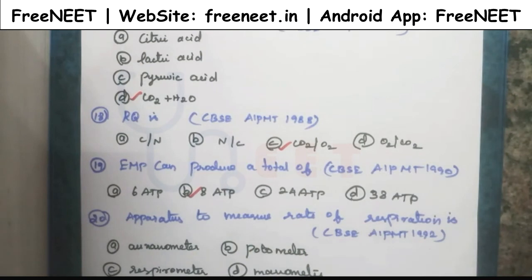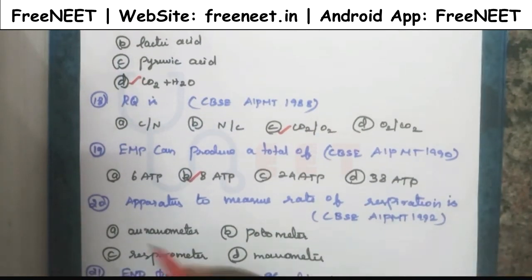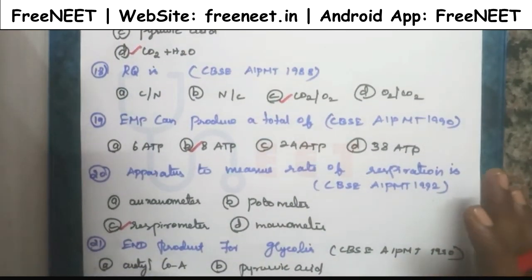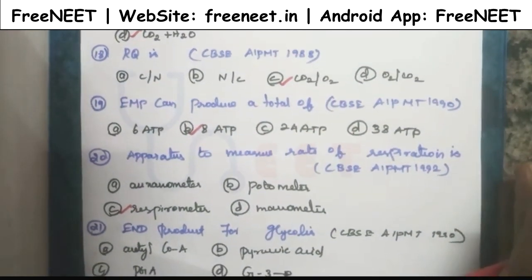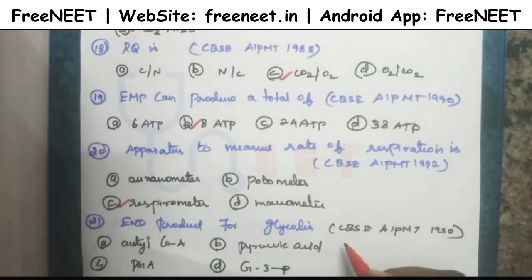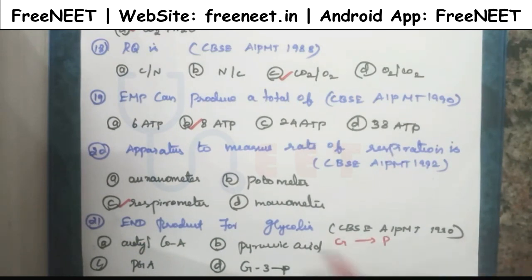A respirometer is used to measure the rate of respiration. The end product of glycolysis is pyruvic acid — glucose is converted into pyruvic acid in glycolysis. Watch the channel daily for more NEET questions. Thank you.